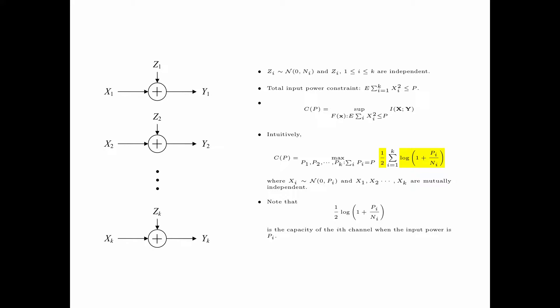Note that in the above formula, one-half times log of 1 plus pi over ni is the capacity of the i-th channel when the input power is pi. And the summation i of pi equals p means that the total input power is exactly equal to the total input power constraint p.